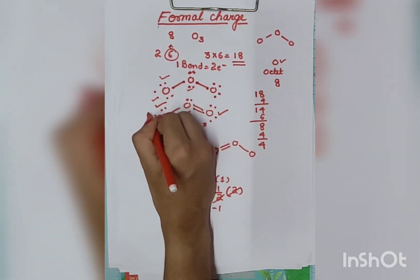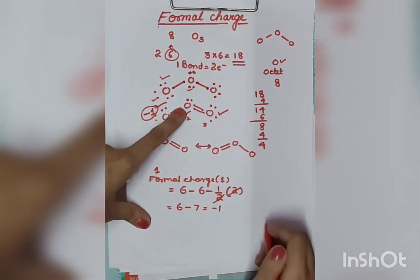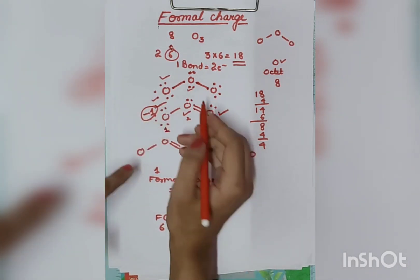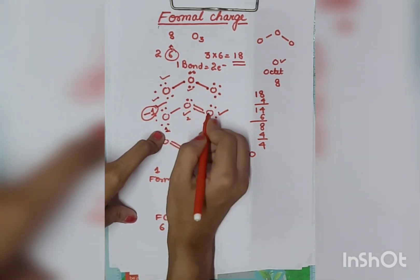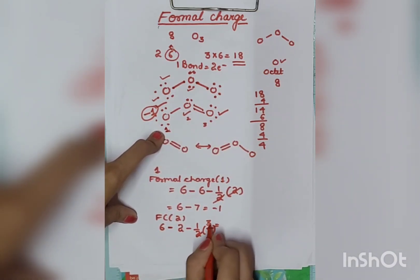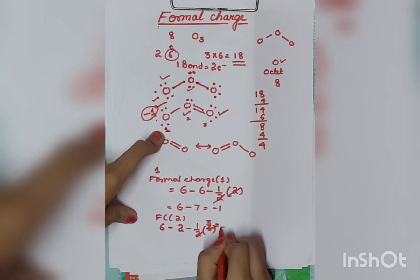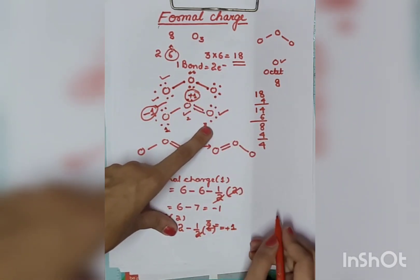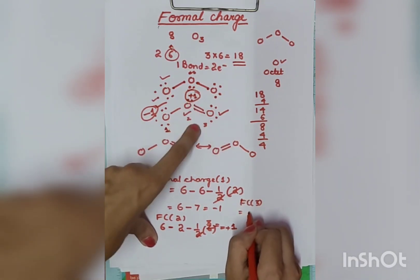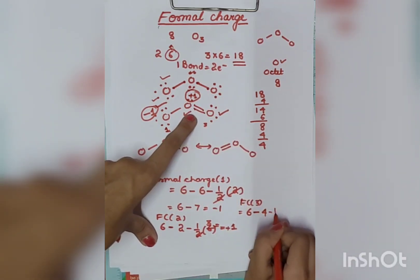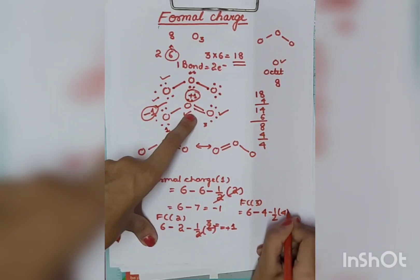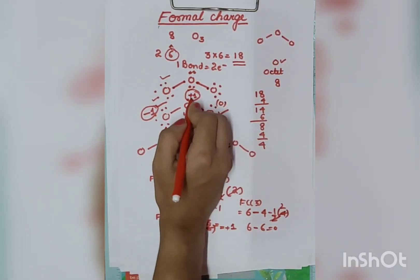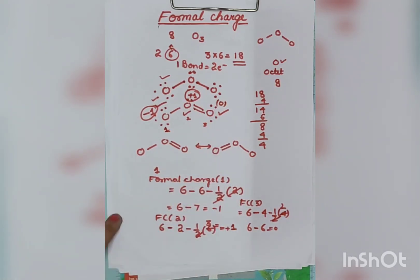Now for atom 2 (the middle atom): formal charge = 6 (outermost) − lone pair: 1, 2 — that's 2 − half of bond pair: 1, 2, 3, 4, 5, 6 — that's 6, so half is 3. So: 6 − 2 − 3 = +1. The middle atom has a formal charge of +1. For atom 3: outermost = 6, lone pair: 1, 2, 3, 4 — that's 4, bond pair: 1, 2, 3, 4 — that's 4. So: 6 − 4 − 2 = 0. Atom 3 has formal charge 0. So the formal charges are: −1, +1, and 0. This is how you calculate formal charge. Thank you.